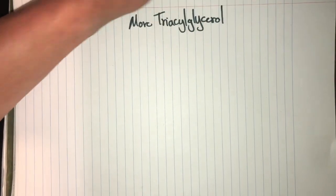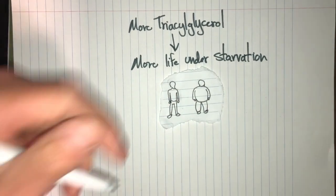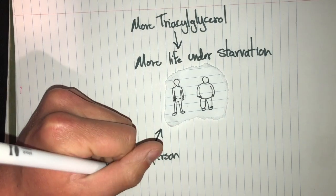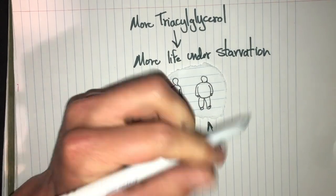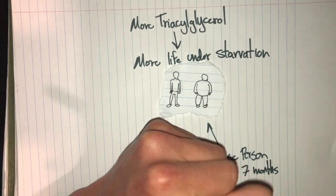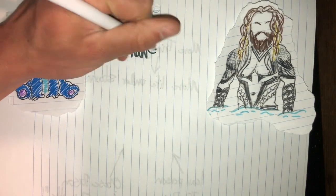To summarize, more triacylglycerol means you can live longer under starvation conditions. Just to further explain, a lean person would be able to live for about 70 days, whereas an obese person would be able to live for six or seven months. So that person's survival time is mainly determined by the size of their triacylglycerol.